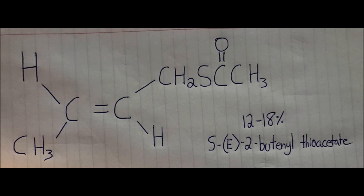Thioacetates are acetate derivatives of a thiol. An acetate is a salt formed by acetic acid combining with a base. Thioacetates usually do not smell, or smell very little, until activated by water. This is why many dogs who have been sprayed by skunks will smell again after getting wet, even weeks after being sprayed. The acetate in skunk spray is C6H10OS and is much less common than both of the thiols.